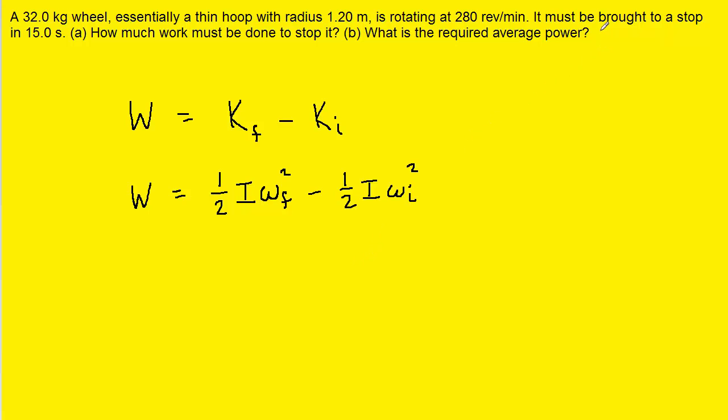Now the question notes that eventually this thin hoop will be brought to a stop, and that means that its final angular speed will equal zero radians per second. If we plug in zero radians per second, we're going to have zero squared times all of these terms, and that's just going to go to zero. So this is basically zero minus the initial rotational kinetic energy.